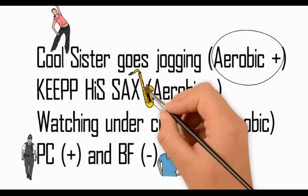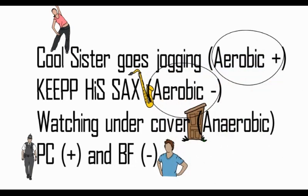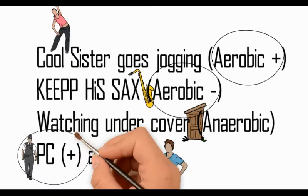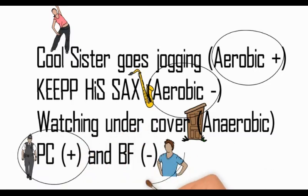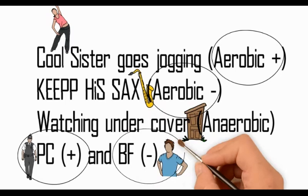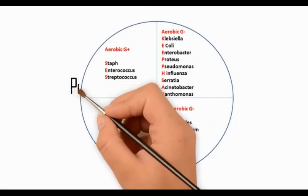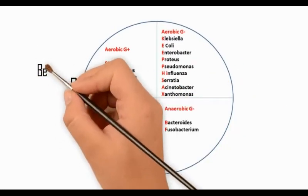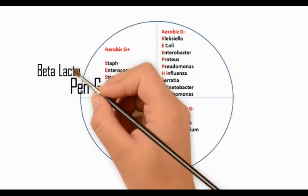Klebsiella, E. coli, Proteus, Pseudomonas, Haemophilus influenzae, Salmonella, Serratia, Acinetobacter, and Xanthomonas are aerobic gram-negative organisms. Peptostreptococcus and Clostridium are anaerobic gram-positive, while Bacteroides and Fusobacterium are anaerobic gram-negative.